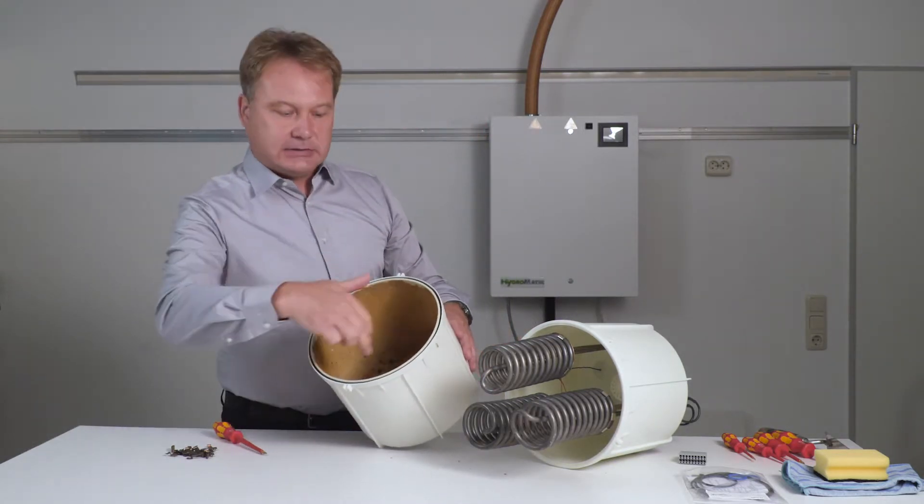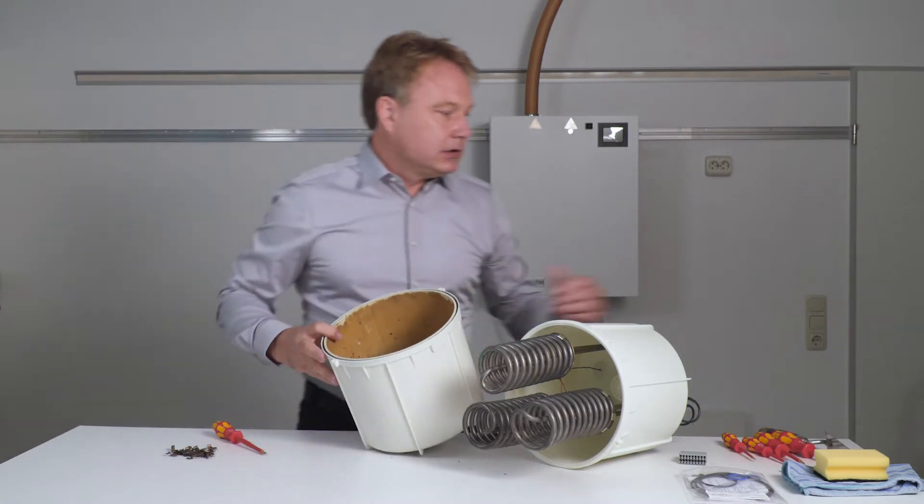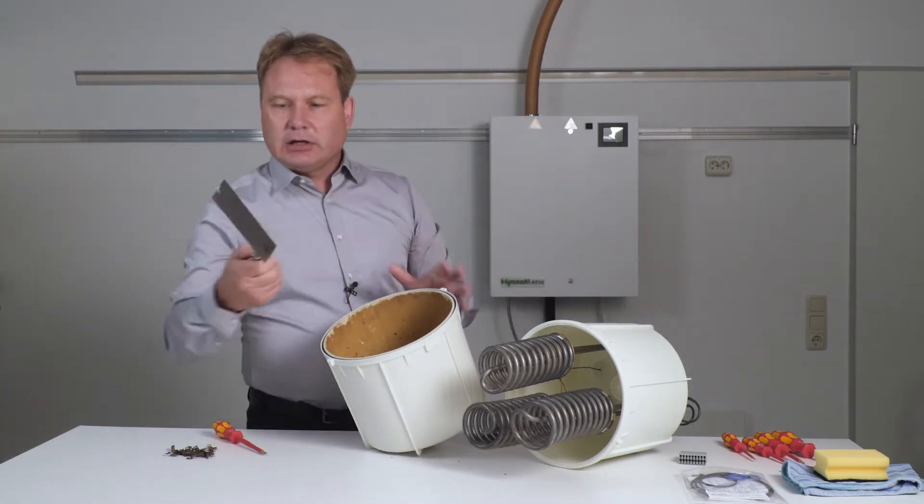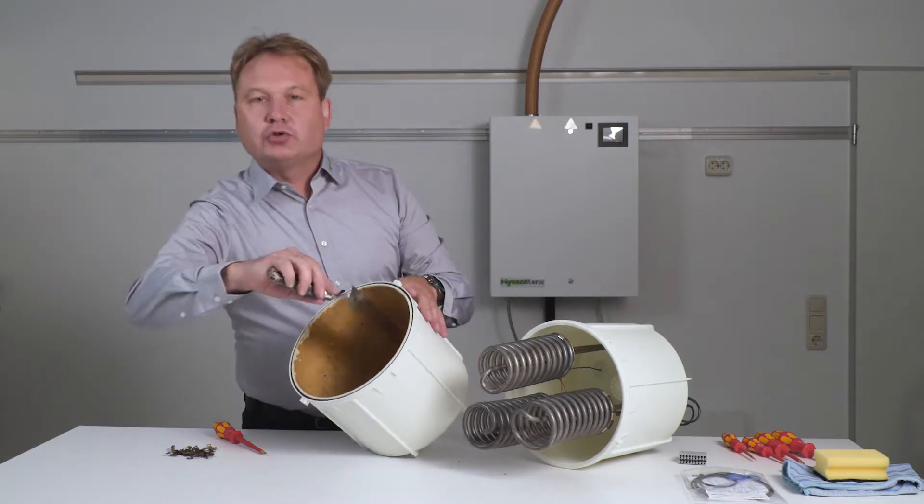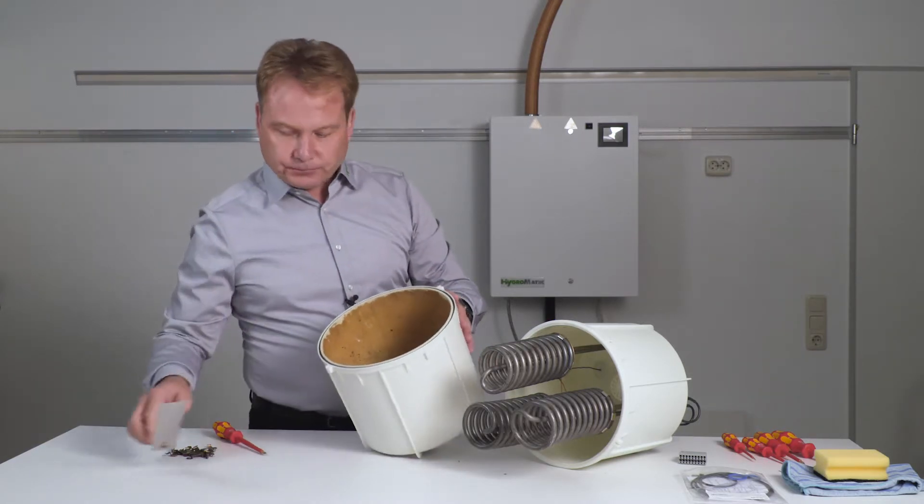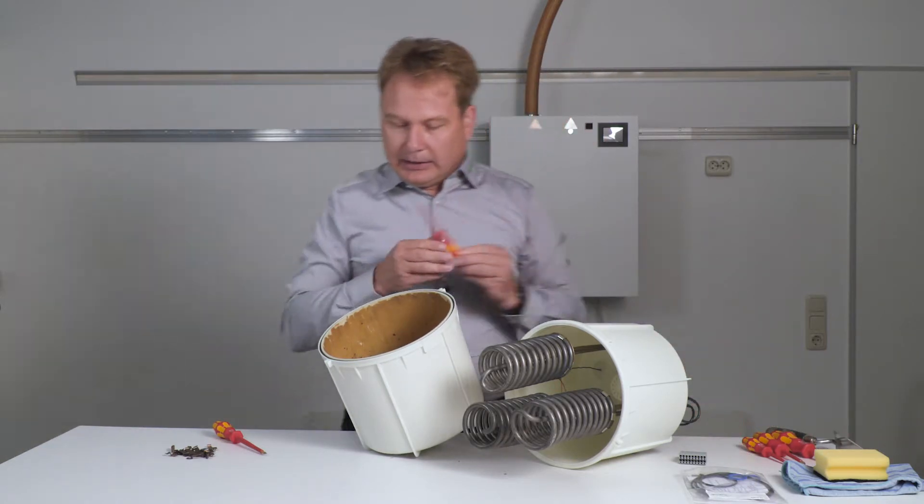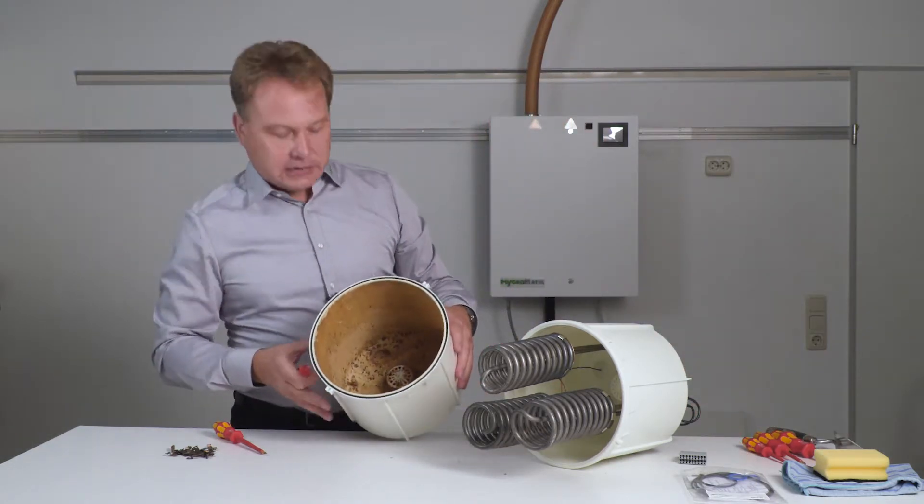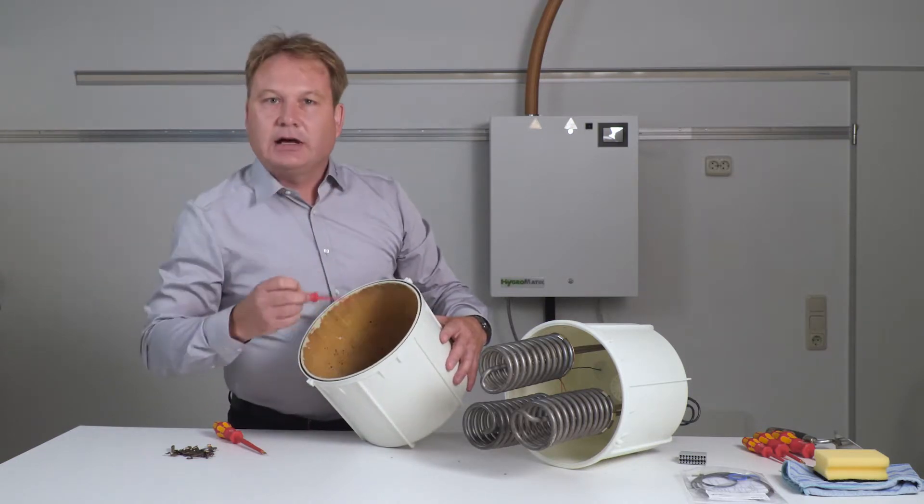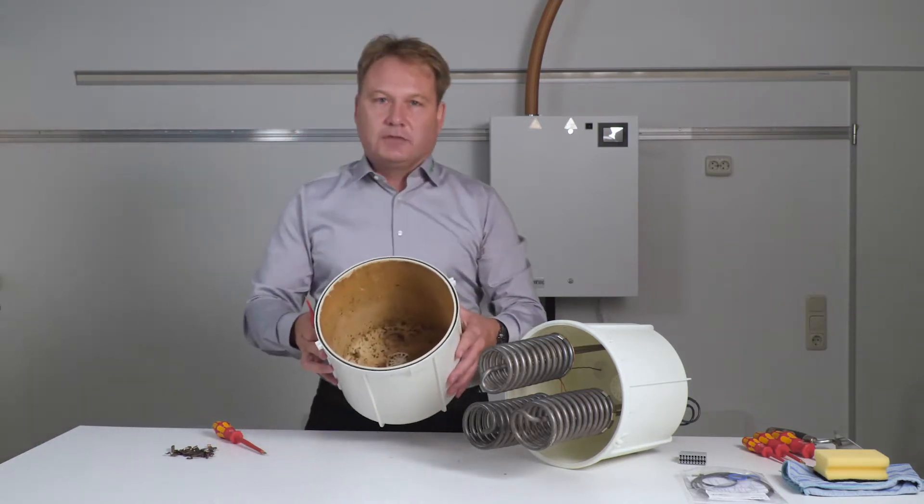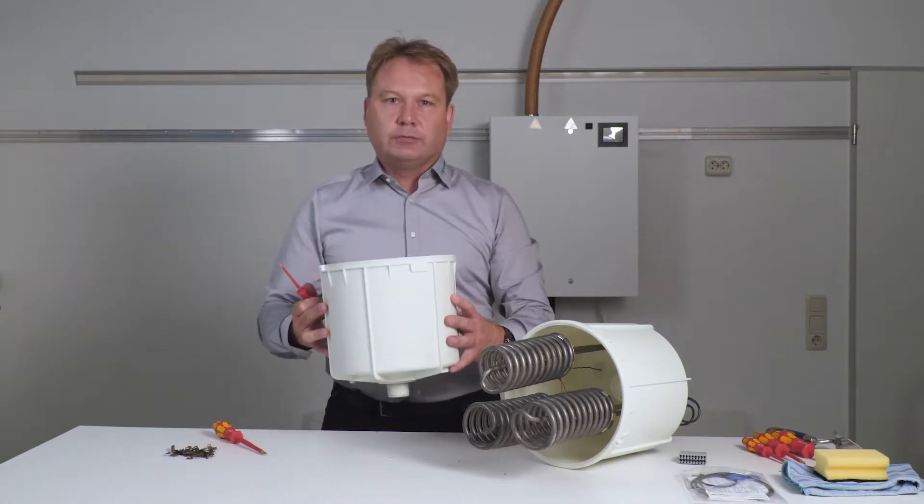To remove the coarse particles from the cylinder wall, you can use a standard scraper or spatula and remove the coarse particles. Please also clean the cylinder strainer that we see here. The holes, of course, must be clear so the cylinder water can be pumped out completely.